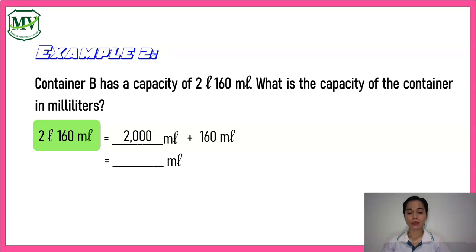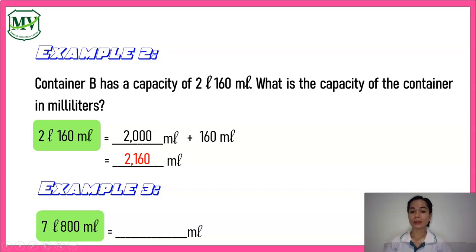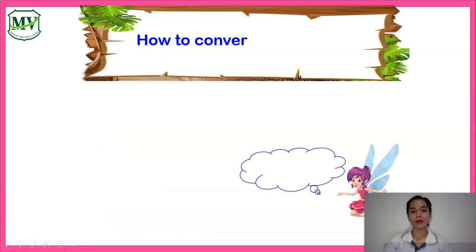The sum of two thousand and one hundred sixty is two thousand one hundred sixty. So we can say that the capacity of the container is two thousand one hundred sixty milliliters. Next, converting seven liters and eight hundred milliliters: seven liters multiplied by one thousand is seven thousand milliliters, plus eight hundred milliliters. So seven liters and eight hundred milliliters is equal to seven thousand eight hundred milliliters.